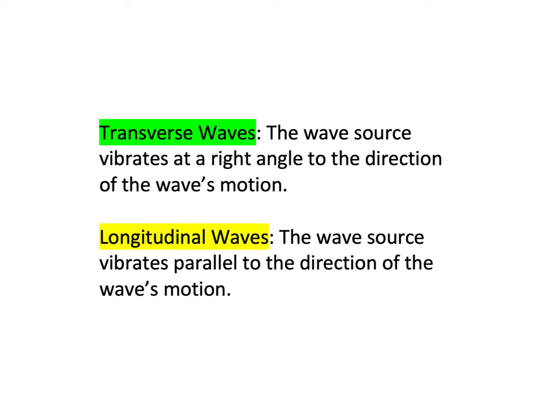Transverse waves are waves where the wave source — that is, the thing that's vibrating — vibrates at a right angle to the direction of the wave's motion. That's in contrast with a longitudinal wave, where the wave source vibrates parallel to the direction of the wave's motion.